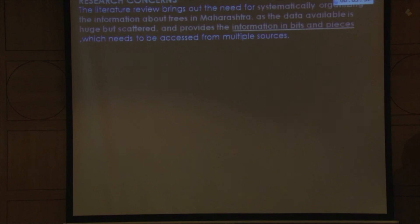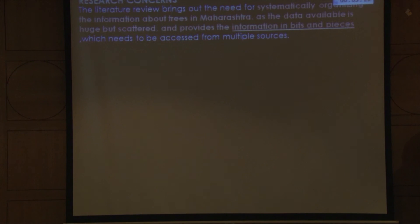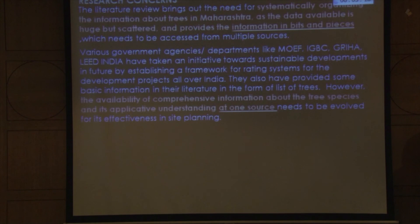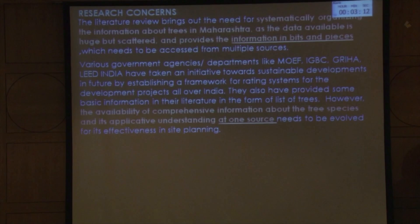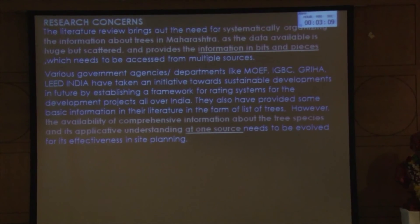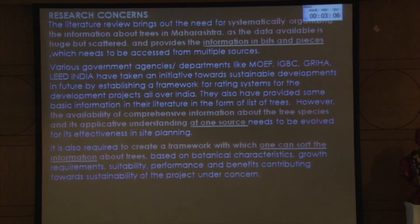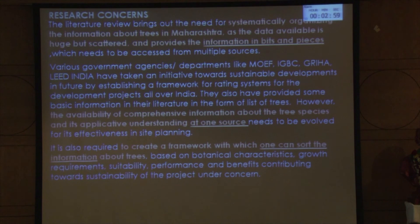My research concerns stem from the fact that information available to us comes in bits and pieces. If I have to prepare a planting plan, I sit with 10 to 12 books around me and often end up confused about what to plant, because there are multiple sources. Applicative understanding from a single source is not available, and there is no framework to sort information according to our decision-making process — no sorting mechanism exists. These are the research concerns I started with.